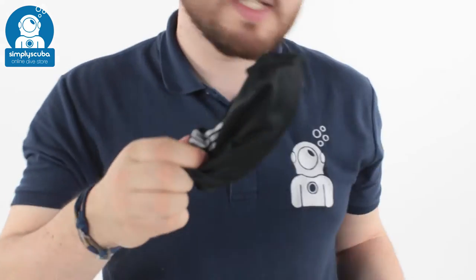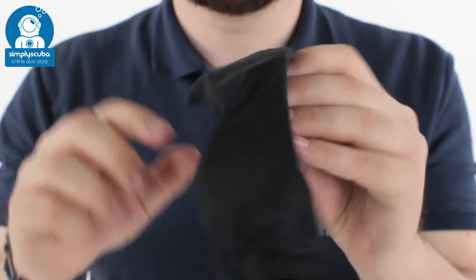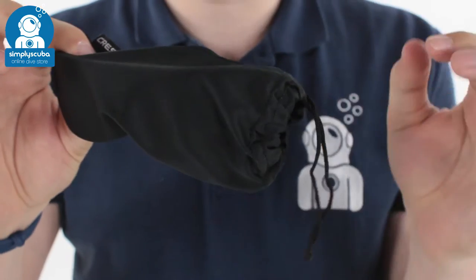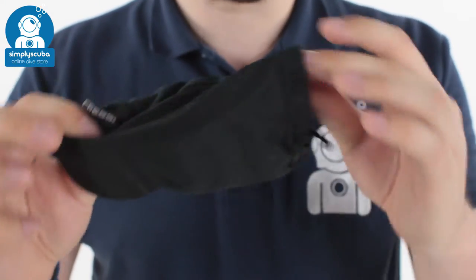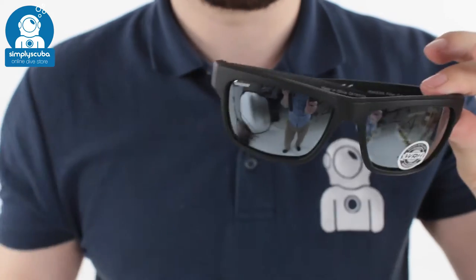On the inside of the case you also get a nice little microfiber pouch which is going to protect your sunglasses from scratch and wear and tear, and you can also use it to clean the lenses without scratching them.